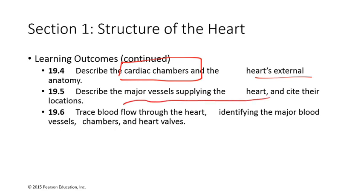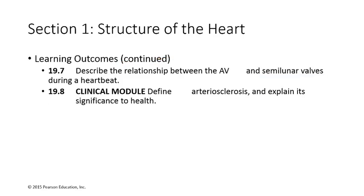Those coronary arteries and cardiac veins are flowing along the sulcuses on the outside. The major vessels supplying the heart include the inferior and superior vena cava, bringing deoxygenated blood back in from the body, as well as the coronary sinus bringing blood back from the heart itself. You should also think about the atrioventricular valves and semilunar valves and how they open and close in response to pressure changes. Finally, look over the section on atherosclerosis.